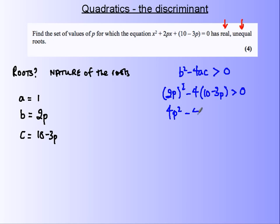Four p squared minus forty, minus minus plus twelve p, greater than zero.